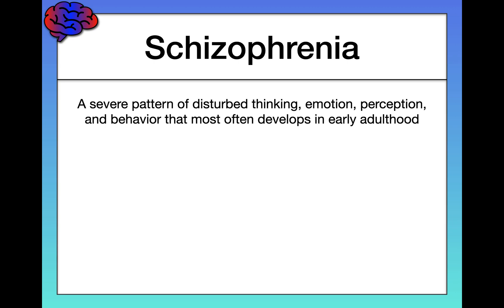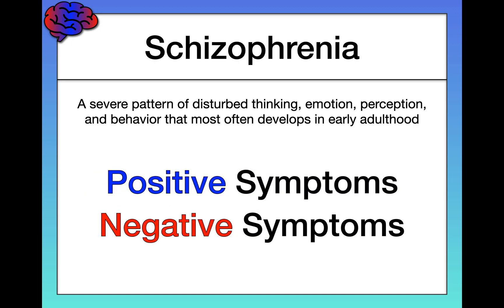Next, let's discuss the symptoms of schizophrenia, which can be either positive or negative. As was the case for terms like positive reinforcement and negative reinforcement, positive and negative do not mean good or bad. Instead, positive means an addition of something, whereas negative means a subtraction, or the absence of something.